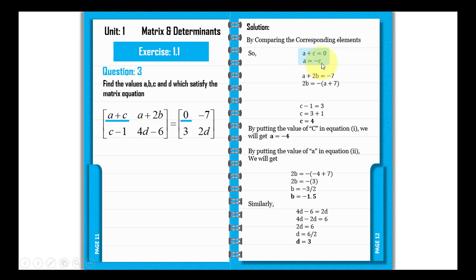So a equals minus c. From the left side, we have a plus 2b.